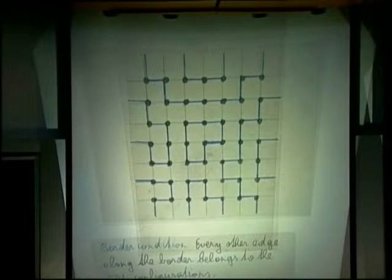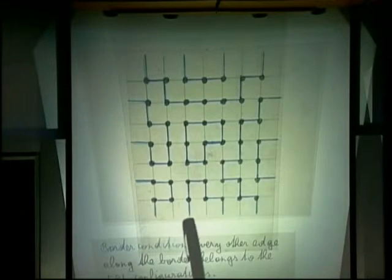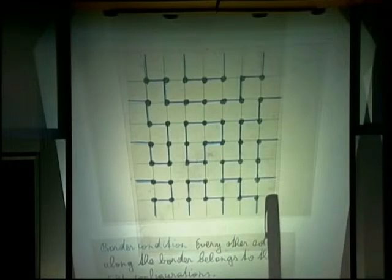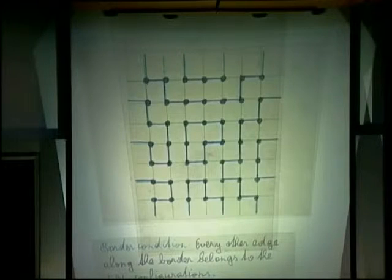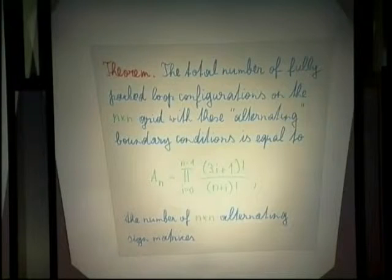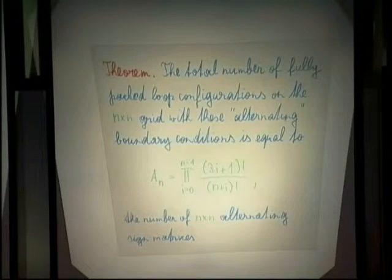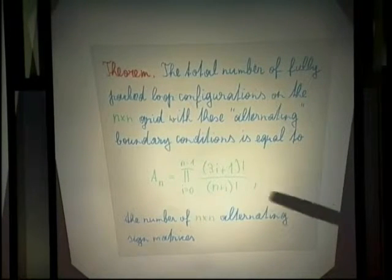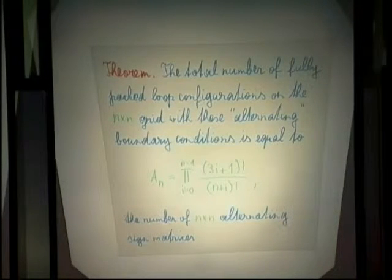The specific boundary condition is that I take every other edge along the boundary. This is a physics model, but why are combinatorialists interested? Because it turns out that fully packed loop configurations on this square grid with this special boundary condition are in bijection with alternating sign matrices, which have occupied combinatorialists a lot in the past, and therefore they are counted by the famous alternating sign matrix numbers.